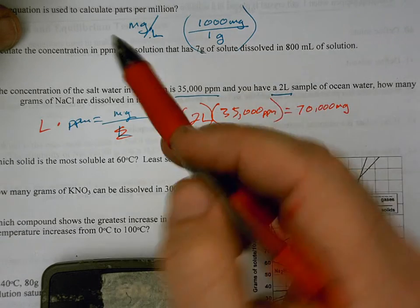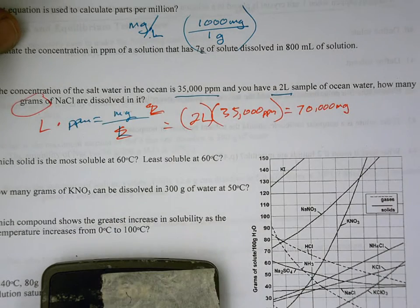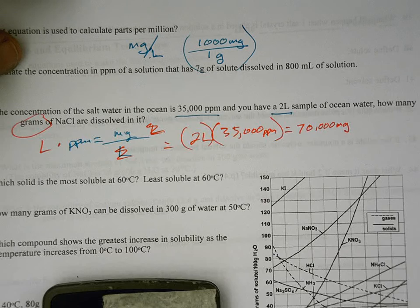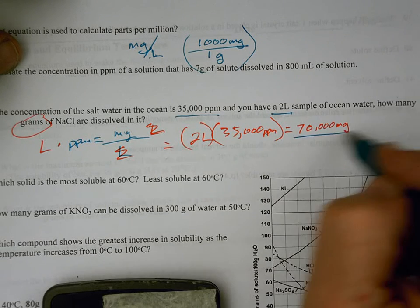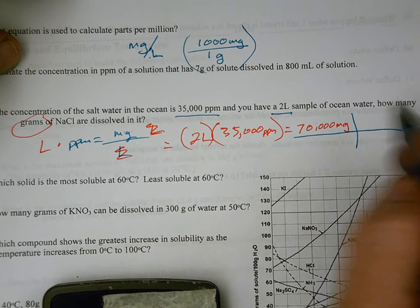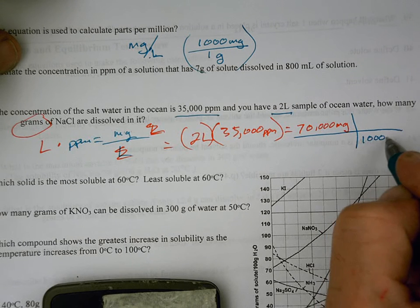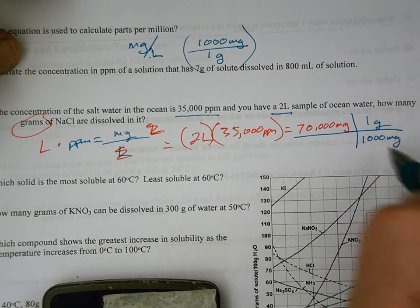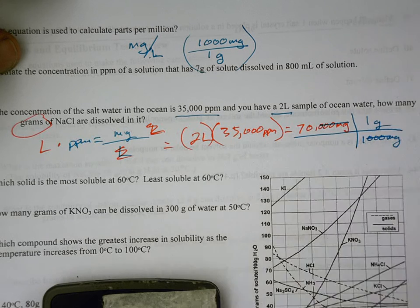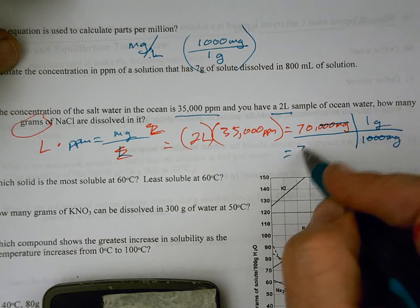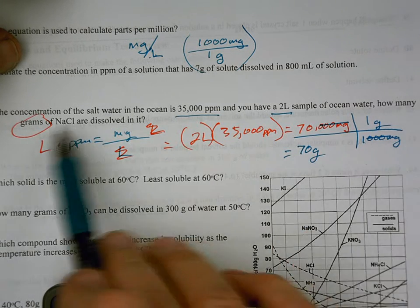But we're looking for how many grams. So going back to our conversion. So now it's just a conversion problem. 1,000 milligrams equals 1 gram. So these three zeros will cancel out with those three zeros, and the answer is 70 grams, and in this case it was NaCl.